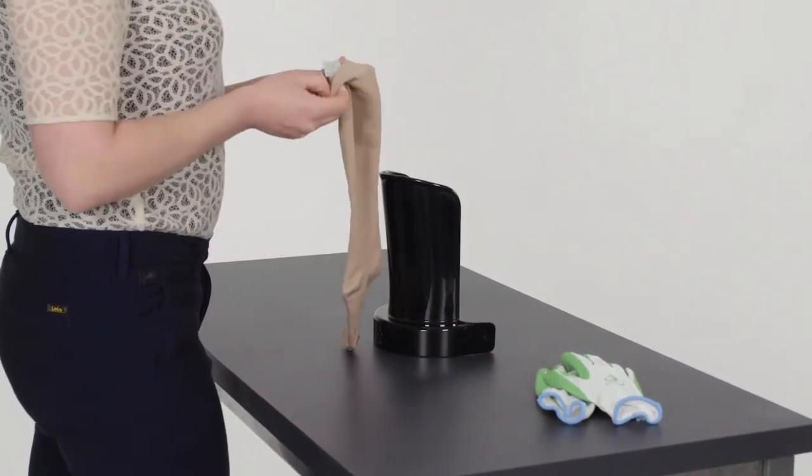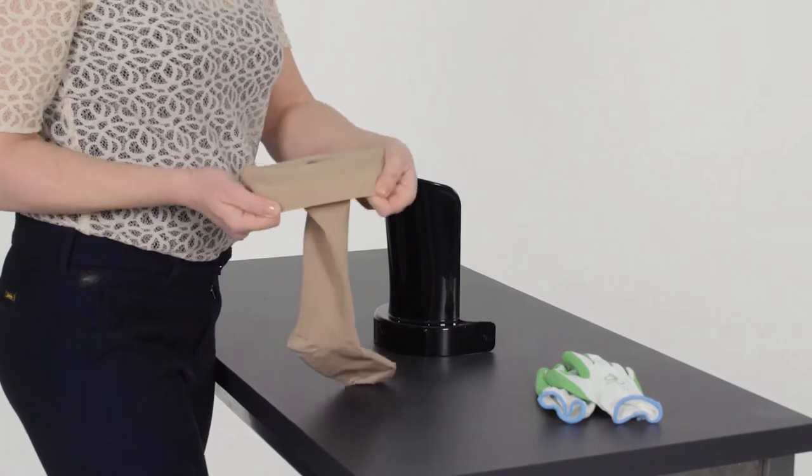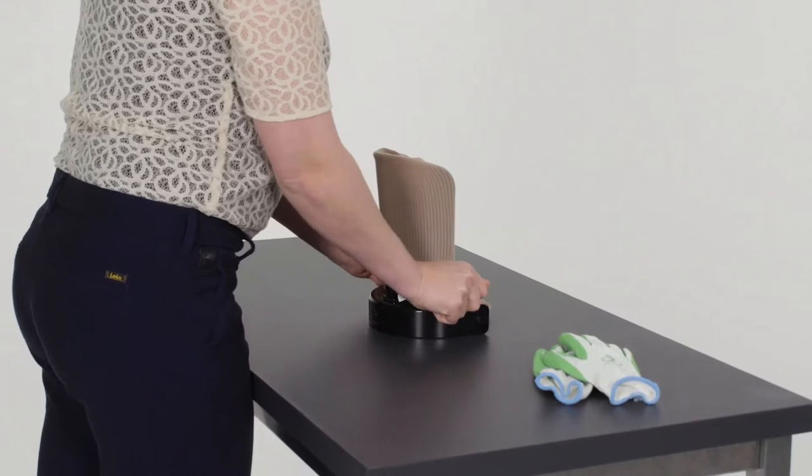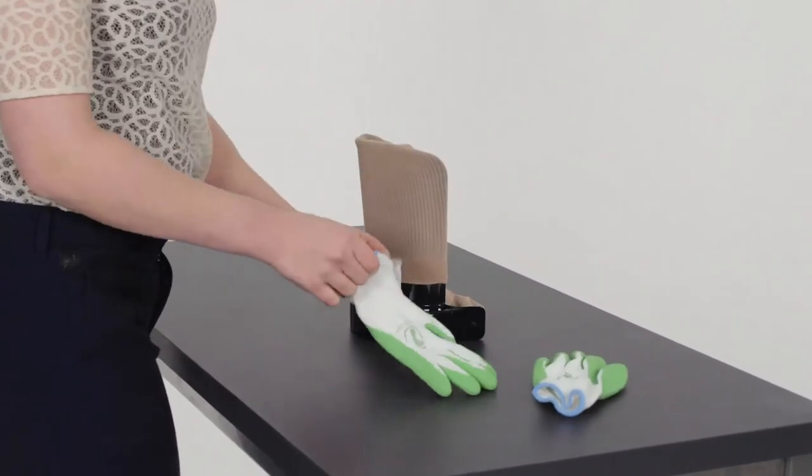Take the stocking with the heel towards you and fold the top of the stocking for a good grip. Place the stocking on the donning shovel and slide the back of the cuff over the donning shovel and pull the stocking down.